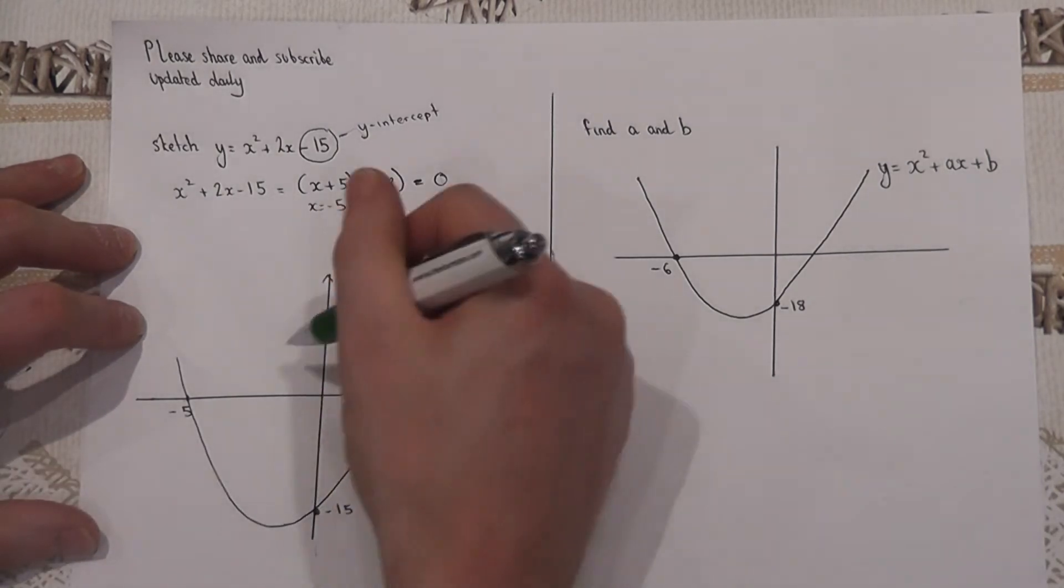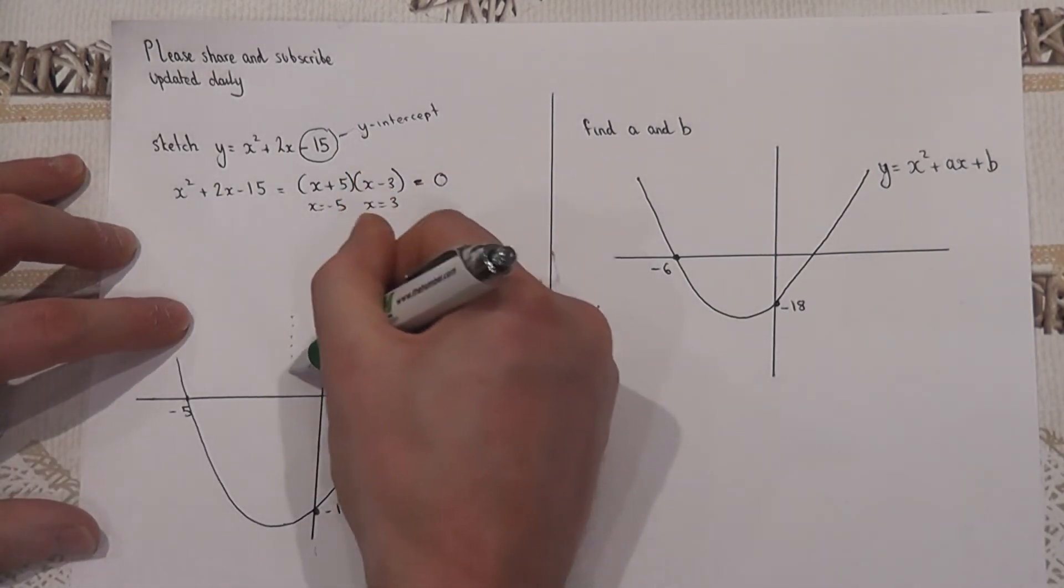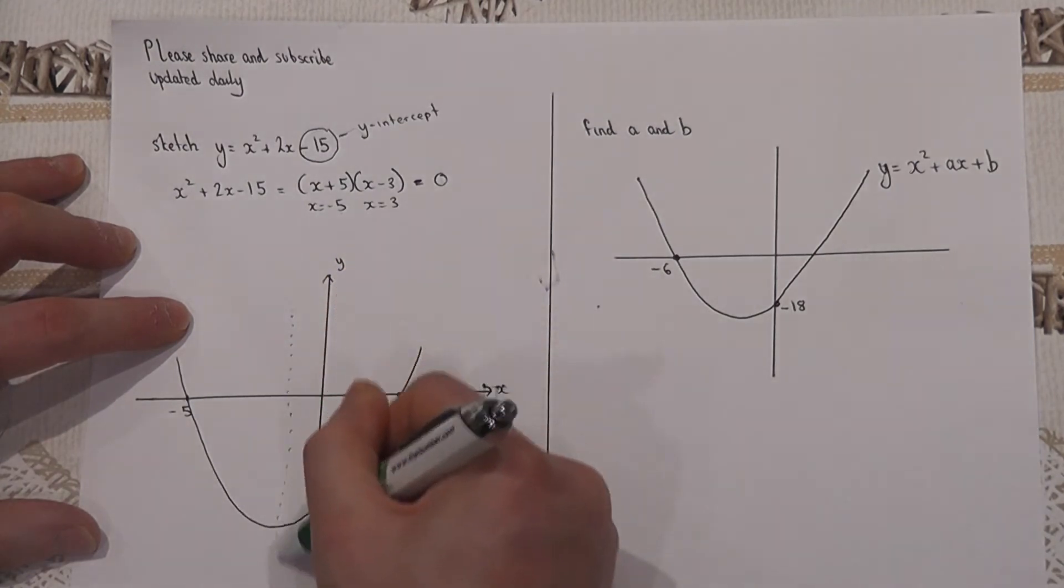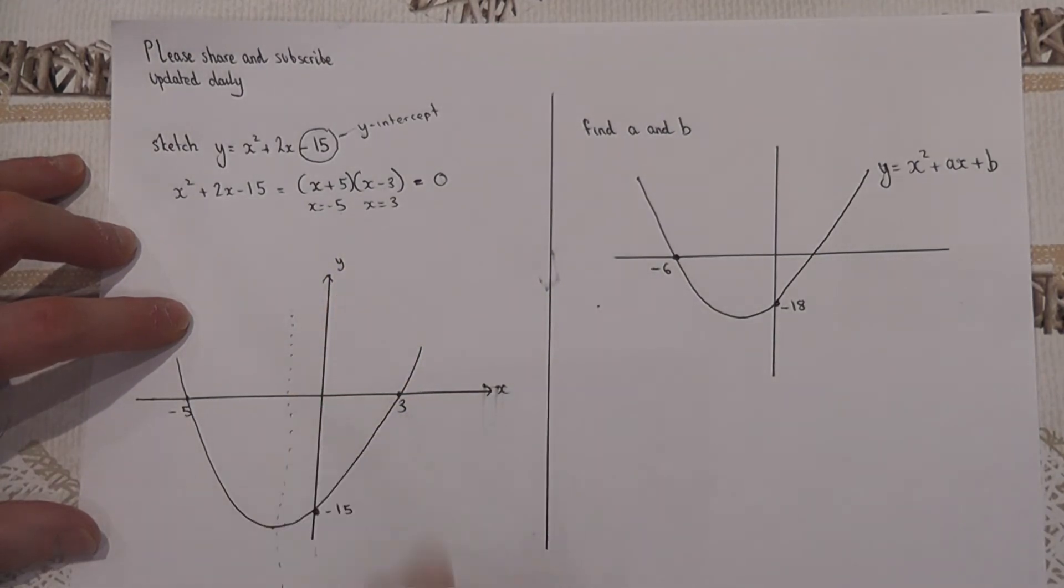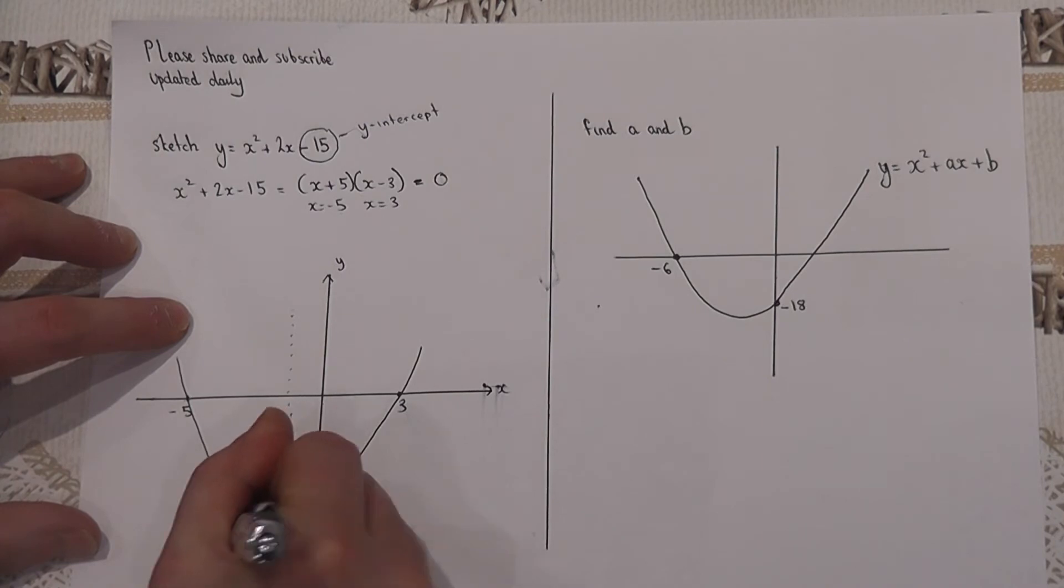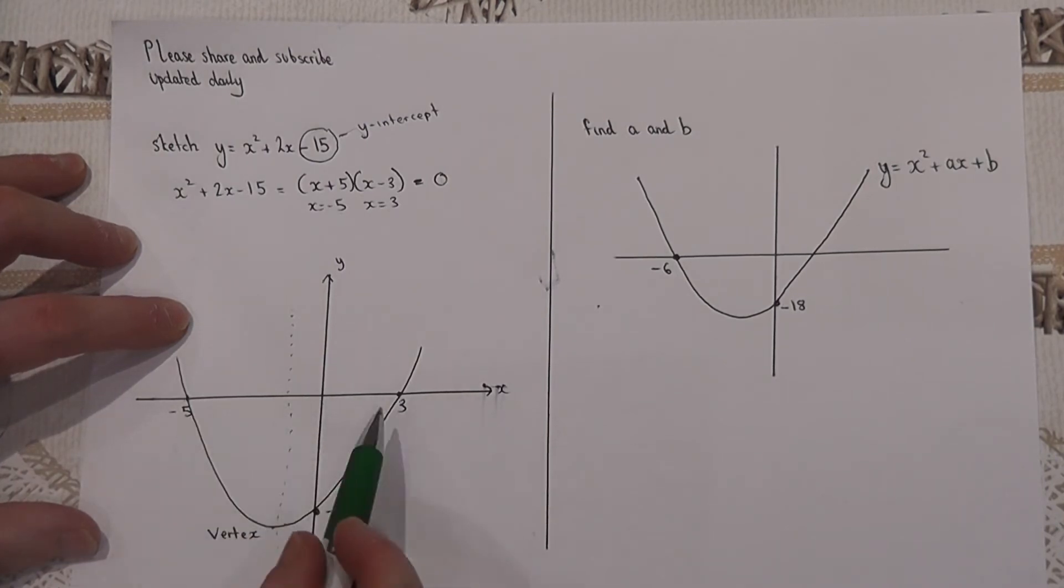One final point: this graph is symmetrical and the bottom of the graph here is called the vertex or the vertices. And because it's symmetrical I can find how far right or left it is. If I add together the two roots, three take away five is minus two, and then half it, which is minus one.